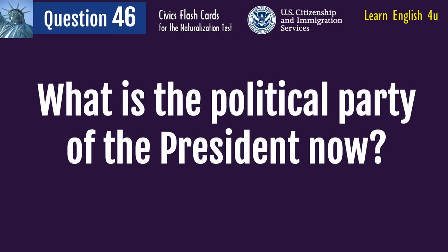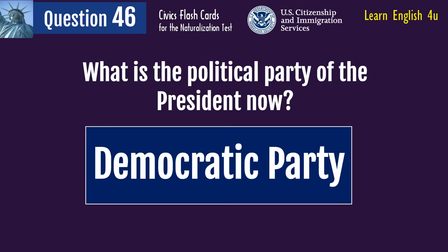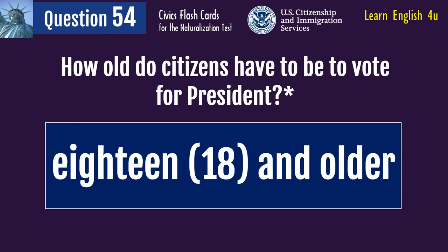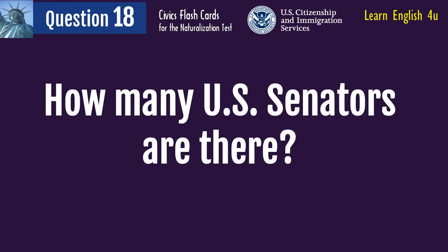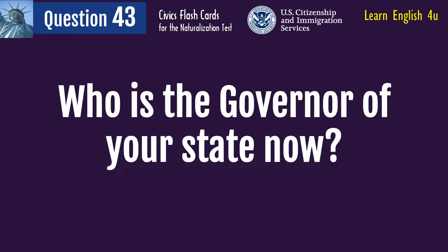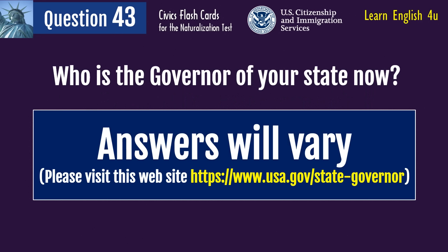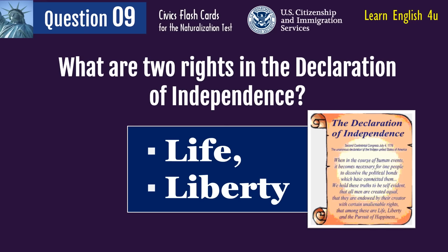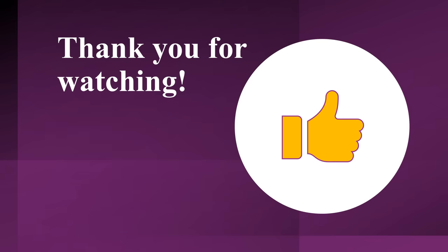What is the political party of the President now? Democratic Party. How old do citizens have to be to vote for president? 18 and older. How many U.S. Senators are there? 100. Who is the governor of your state now? Answers will vary, please visit this website. What are two rights in the Declaration of Independence? Life. Liberty. Thank you for watching.